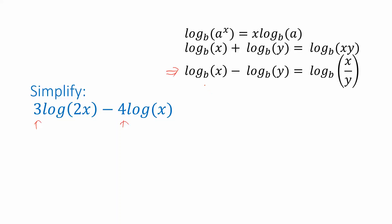The property we want to use doesn't have coefficients in front. How are we going to deal with that? We can go up to the first property, which tells us how to deal with coefficients. If we look at the right side of this identity, there's a quantity in front of the logarithm.